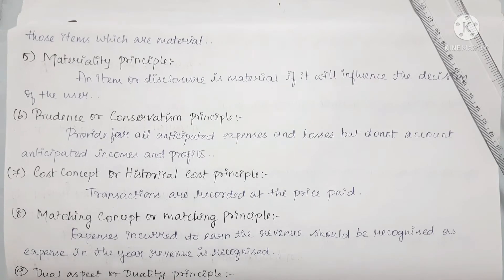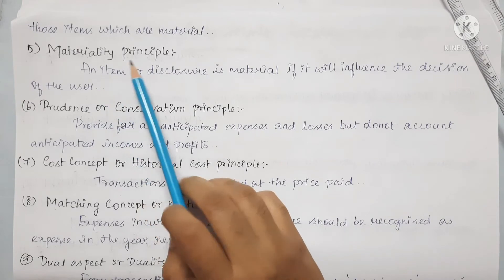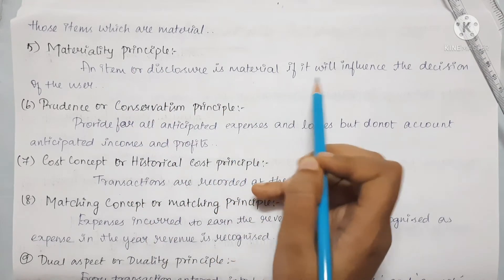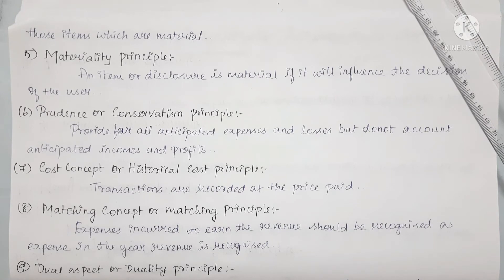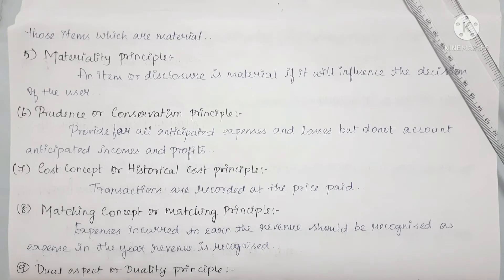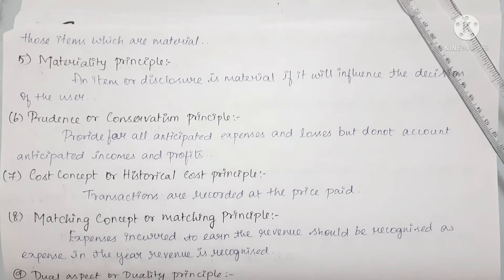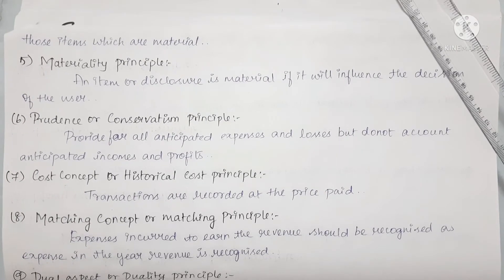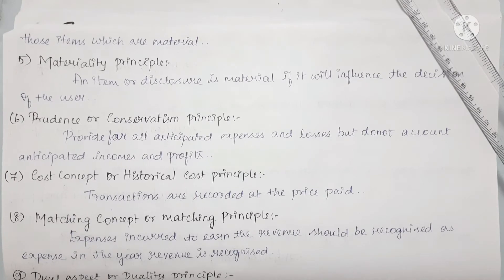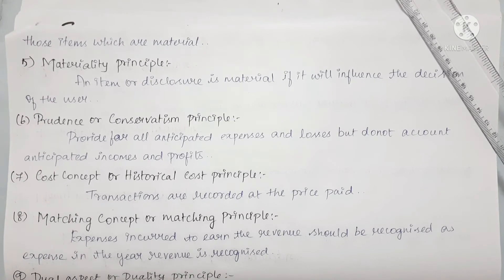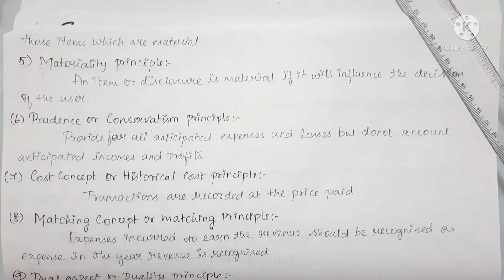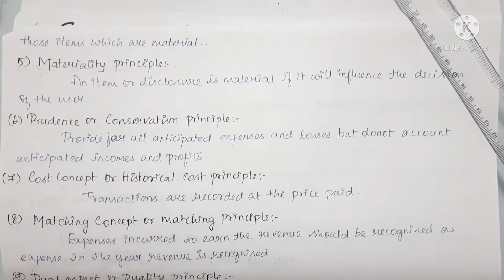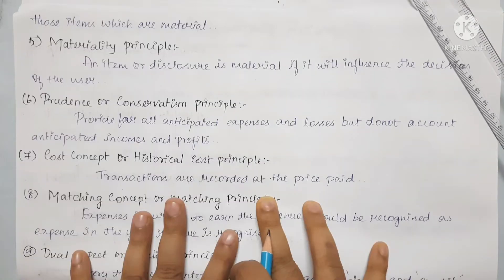Next we will talk about the materiality principle. An item or disclosure is material if it will influence the decision of the user. So everything that is important must be recorded. What is material depends on the point of view — for the business, if it is important, we record it.